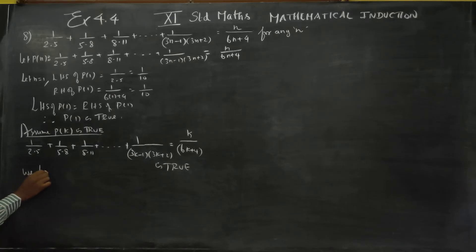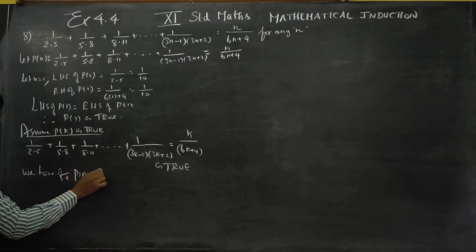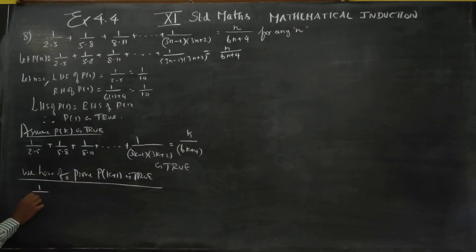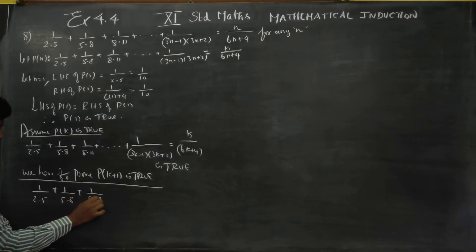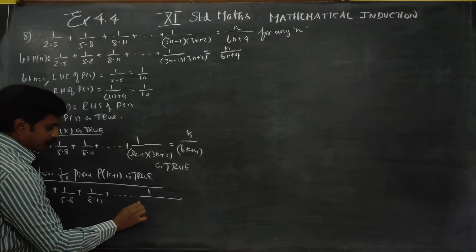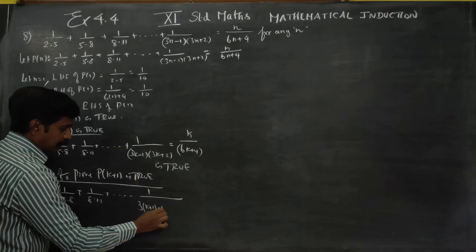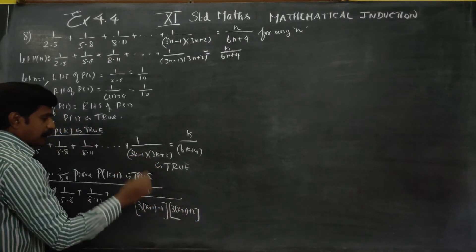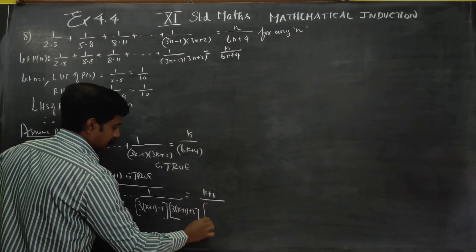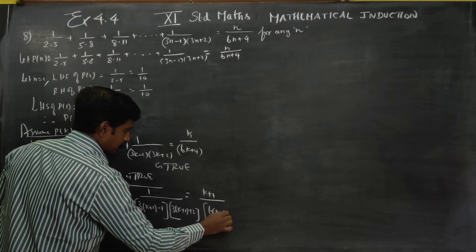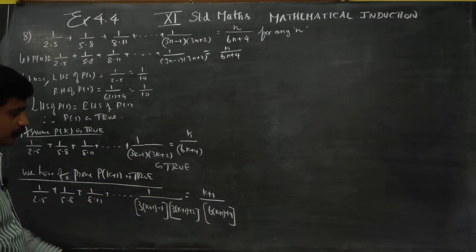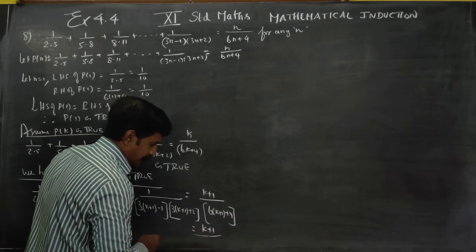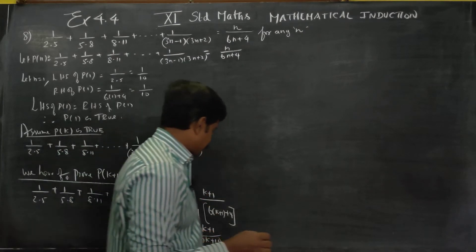We have to prove P of k plus 1 is true. This is the last stage, the climax of mathematical induction. We have to prove: 1 by 2 into 5, plus 1 by 5 into 8, plus 1 by 8 into 11, dot dot dot, 1 by 3 into k plus 1 minus 1, into 3 into k plus 1 plus 2, equals k plus 1 by 6 into k plus 1 plus 4, which simplifies to k plus 1 by 6k plus 10.